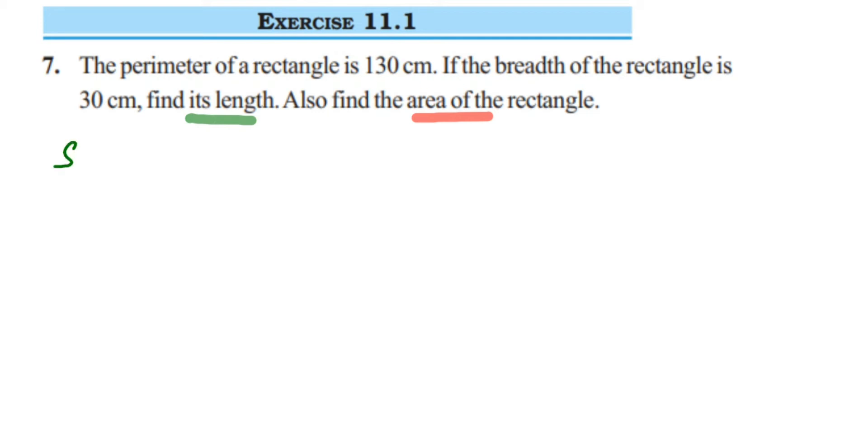Here's the solution. We're given the perimeter, so P = 130 centimeters. They've also given the breadth, so b = 30 centimeters. We have to find the length and then the area. Since perimeter and breadth are given, we'll use the formula for perimeter and substitute the breadth.